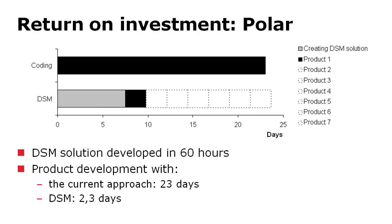We can also calculate the return on investment from this data. What is very interesting with the Polar case is that they used 60 hours — about seven and a half days — to build the languages and generators. It then took about two and a half days to build the same functionality that previously, with the manual approach, took a man-month. So the payback comes already with the first product.